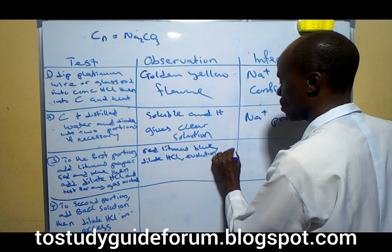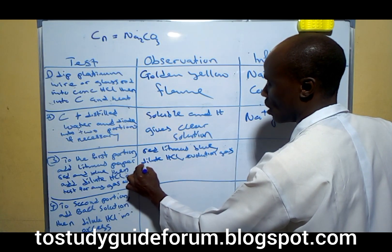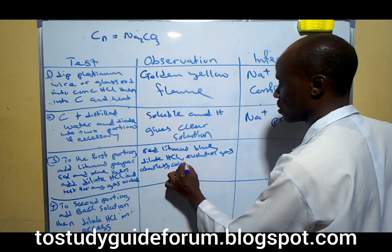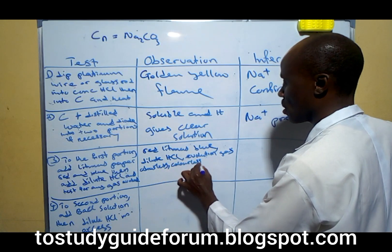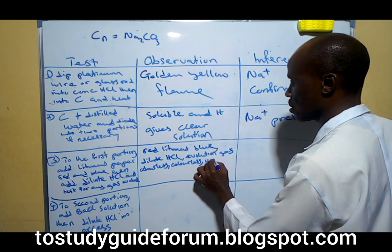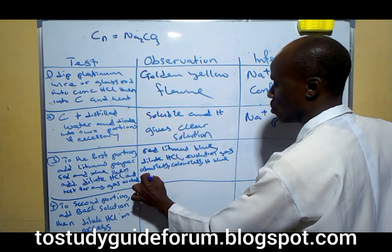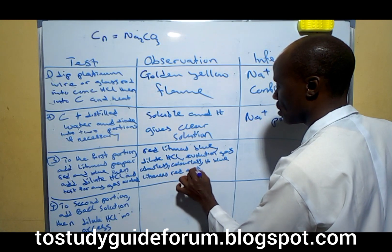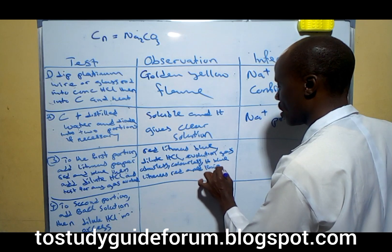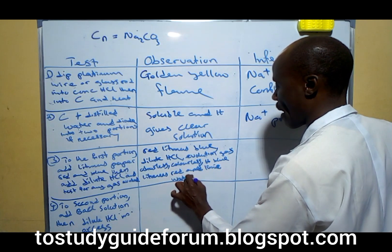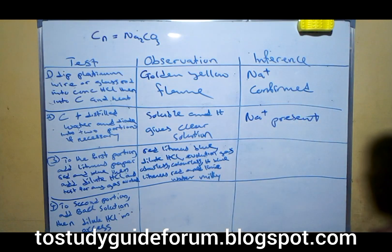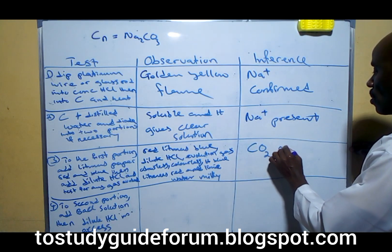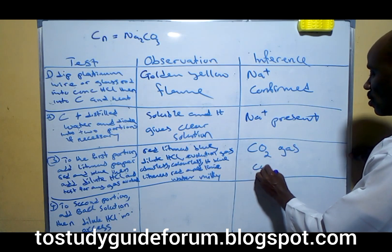An evolution of gas which is colorless. The gas turns blue litmus red, and lime water turns milky. This shows that carbon dioxide gas is present and confirmed.